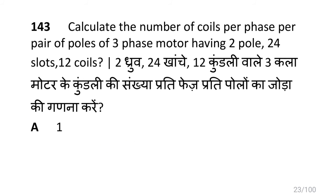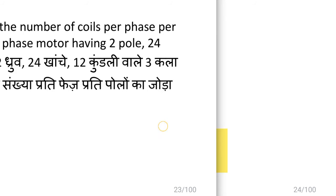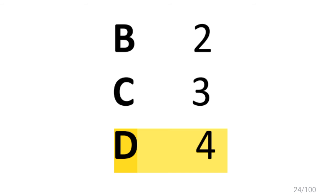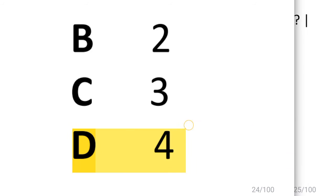Calculate the number of coils per phase per pair of poles of a three phase motor having 2 poles, 24 slots, and 12 coils. The answer is four coils per phase per pair of poles.